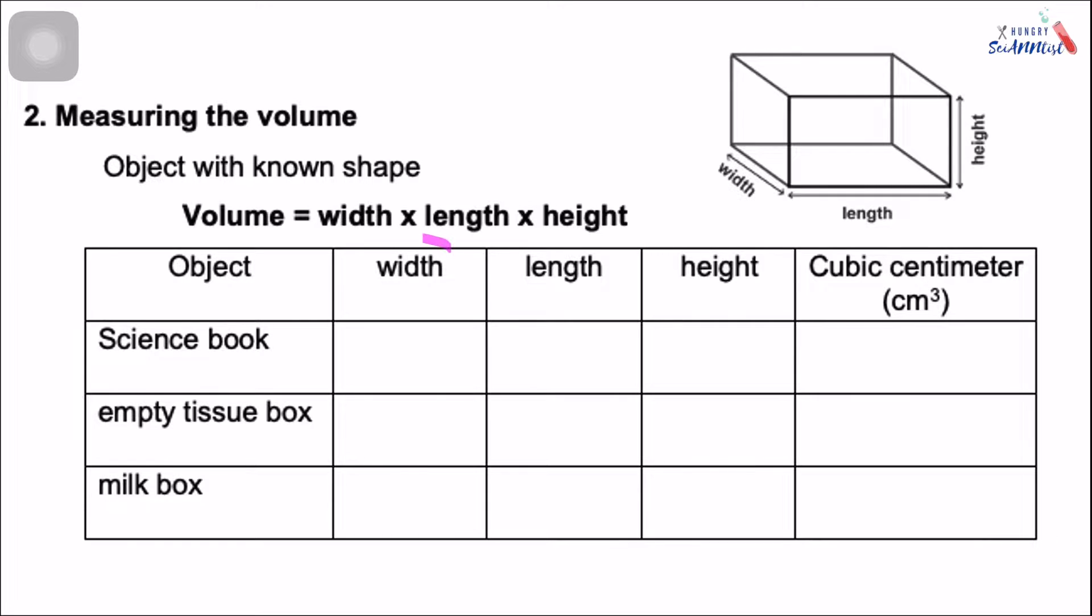First, we need to get the width, the length, and the height. And what formula are we going to use? Volume is equal to width times length times height. And you are going to write your answers here.